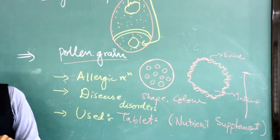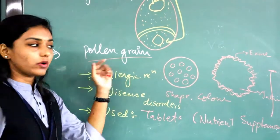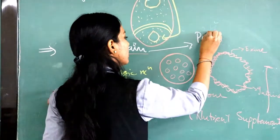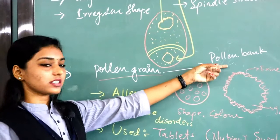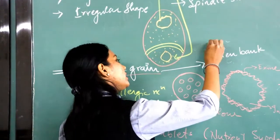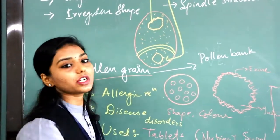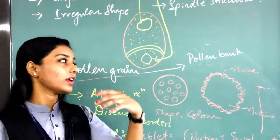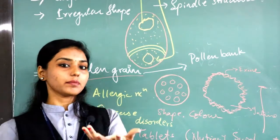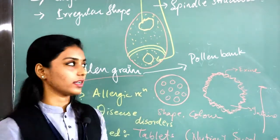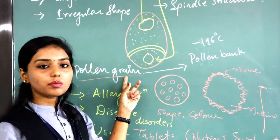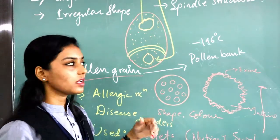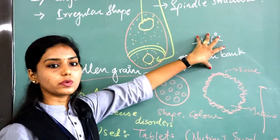The next thing is regarding the storage of pollen grains. Pollen grains are stored in pollen banks. Pollen grains are also stored in liquid nitrogen at a temperature of minus 196 degrees Celsius. At this particular temperature, pollen grains are preserved for a longer duration for further study.